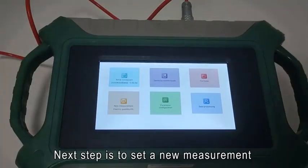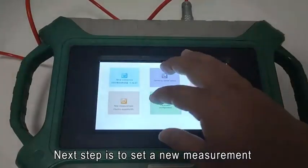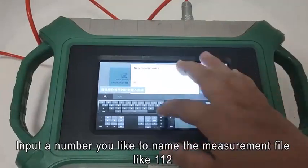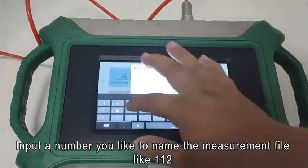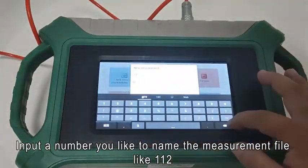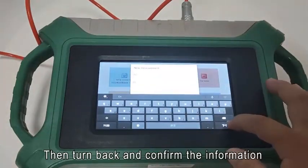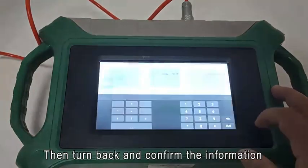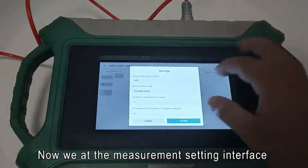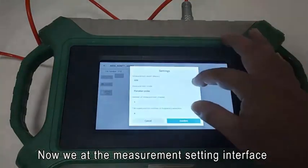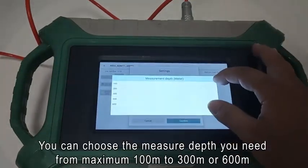Next step is to set a new measurement. Input a number you like to name the measurement file, like 112. Then turn back and confirm the information. Now we add the measurement setting interface. You can choose the measure depth you need.